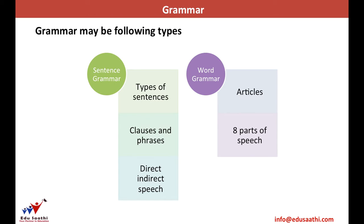Grammar may be classified as sentence grammar or word grammar. Sentence grammar basically helps us to structure the use of sentences in communication — it helps us to form and use correct sentences wherever required. Word grammar works on the words being used in the sentences; it helps us to interpret which word would be the most pertinent and should be used. In sequence, word grammar always precedes sentence grammar.